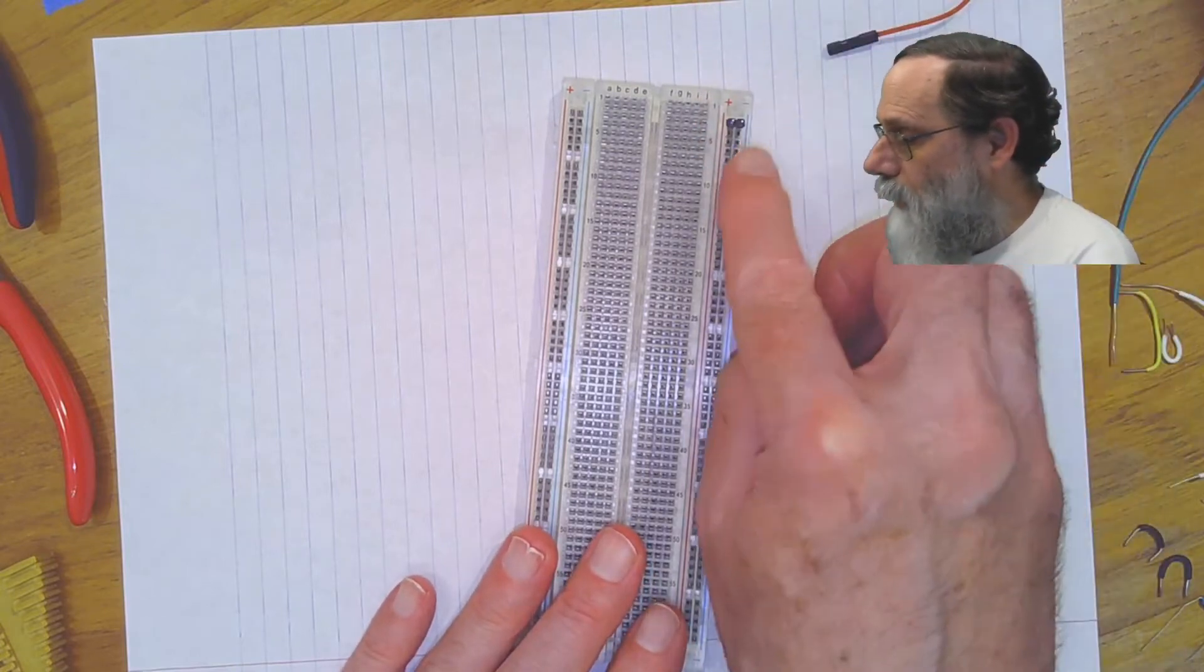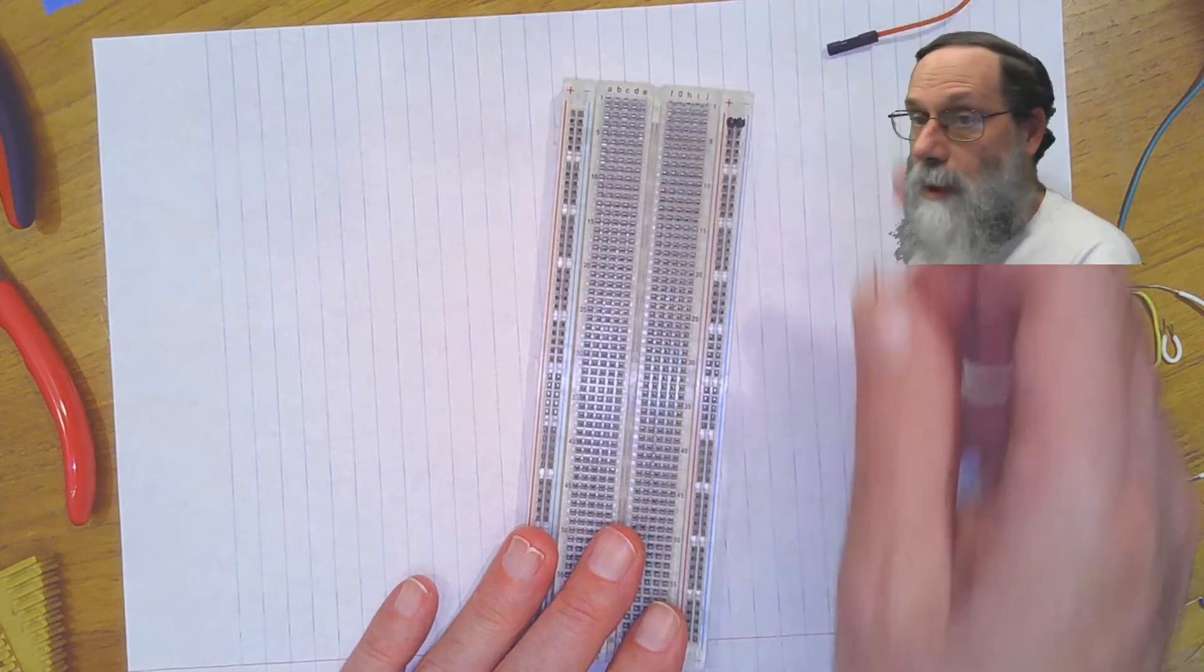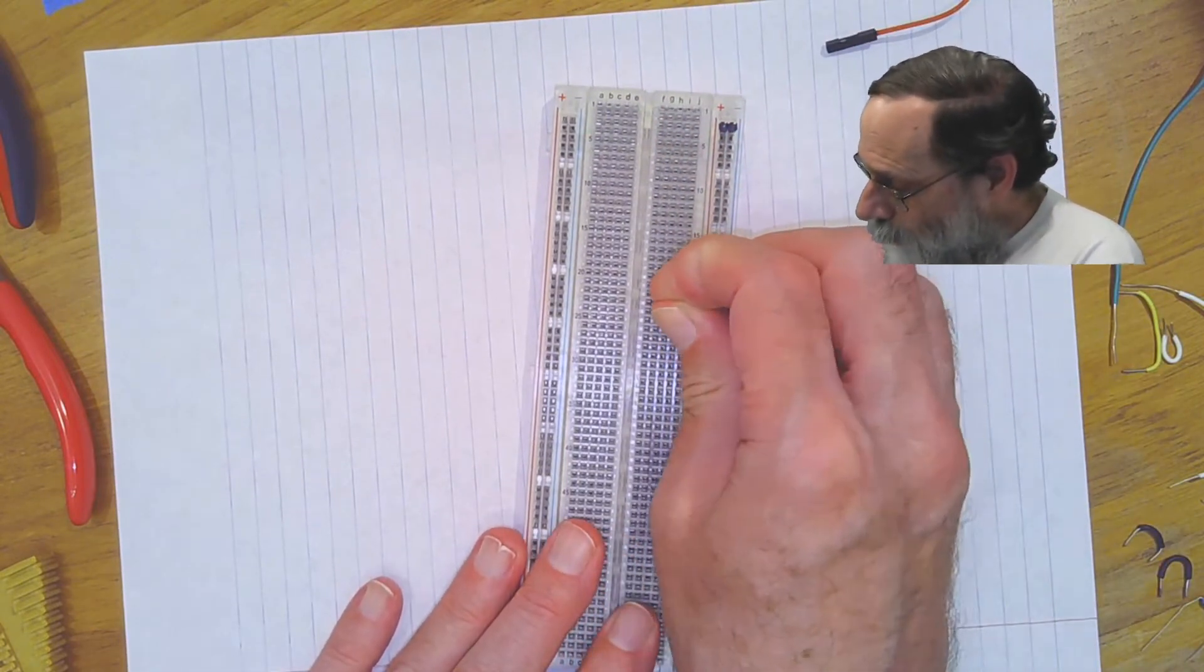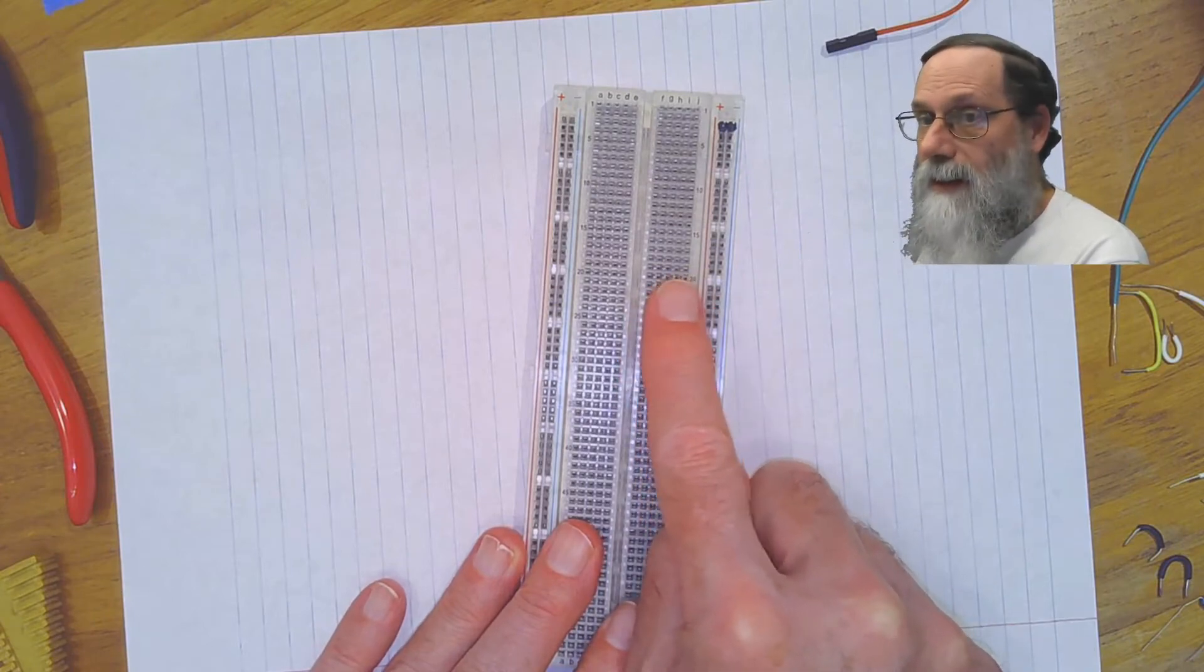When you're doing header pins like this to make connections, you sometimes want to use them for these oscilloscope connections and other things, try to avoid doing single pins like this because they're wobbly.